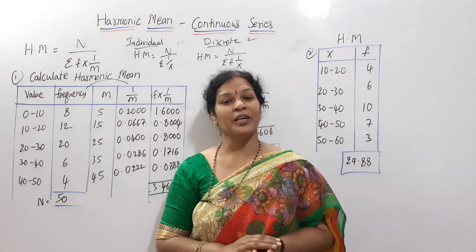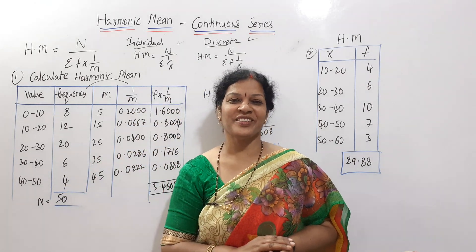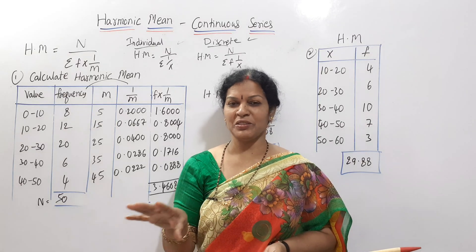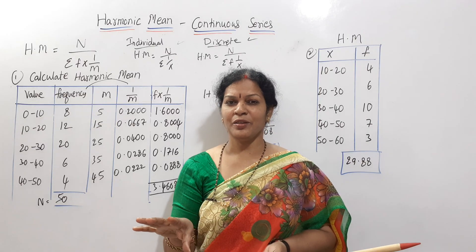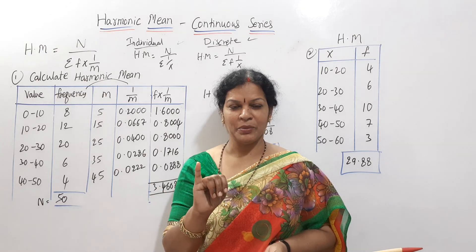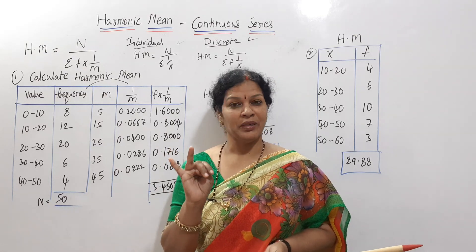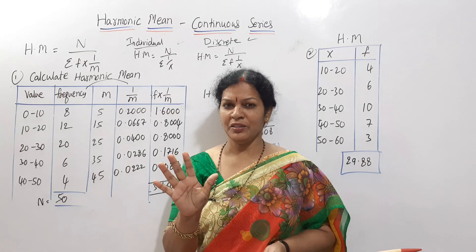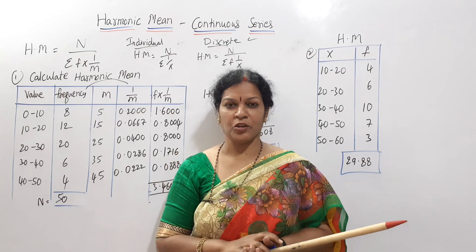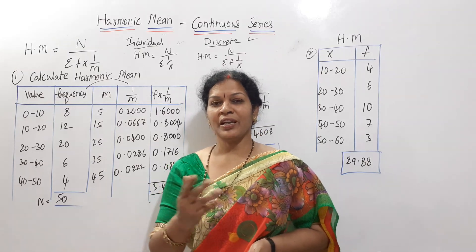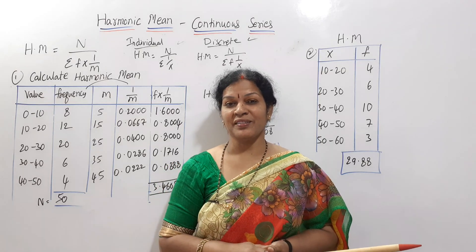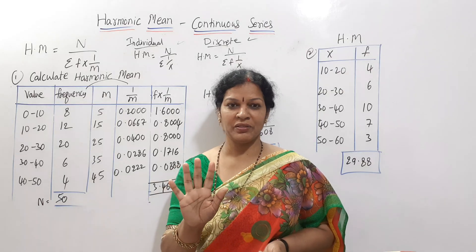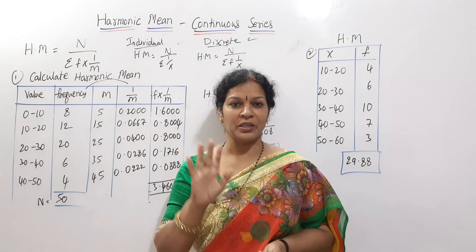In this class, the harmonic mean for a continuous series is covered. In this first segment on measures of central value, the main topics are arithmetic mean, median, mode, harmonic mean, and geometric mean. Median calculations, quartiles, deciles, and percentiles are also connected to this chapter.